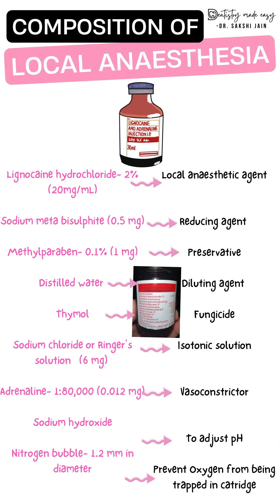Moving to the composition of local anesthesia: the first main component is 2% lignocaine, which equals 20 milligrams per milliliter. If using a 2 cc syringe, it will contain 40 milligrams of local anesthesia, which provides the main management of pain. The next agent is adrenaline, a vasoconstrictor added to oppose the vasodilation caused by the local anesthetic agent.